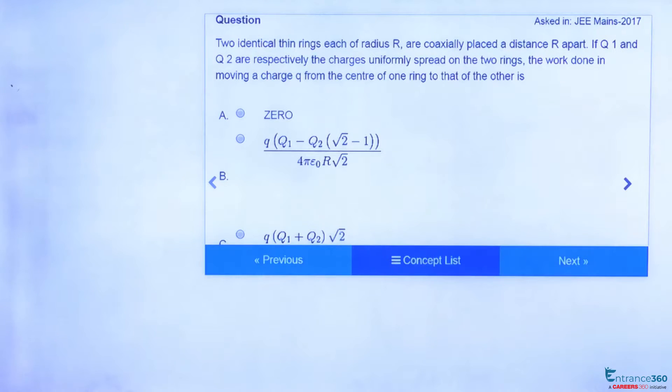You know that to proceed with this question we can use the concept of potential and work done. So let's see how to do the question. We have two rings, say A